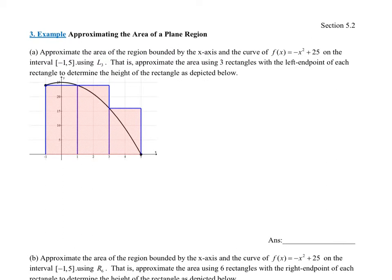So what's the first thing we do? The first thing we do is determine the number of rectangles. How many rectangles do they want? They want 3 — n equals 3 rectangles. What's the second thing we do? We have to determine the width of each rectangle. The width is called delta x, the change in x.